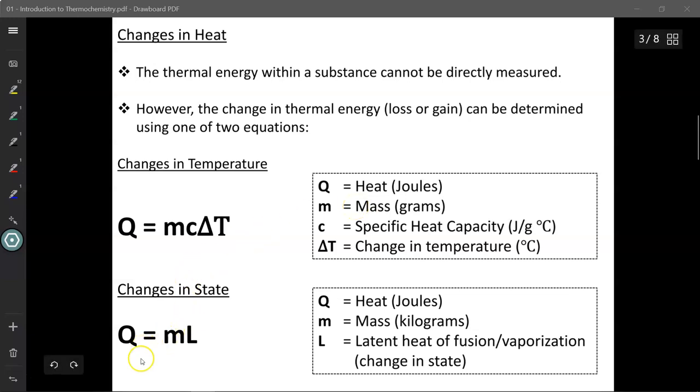The second equation we can use is Q equals ML. This is typically used to measure thermal energy loss or gain during changes in state, so when you're boiling or freezing something, for instance.